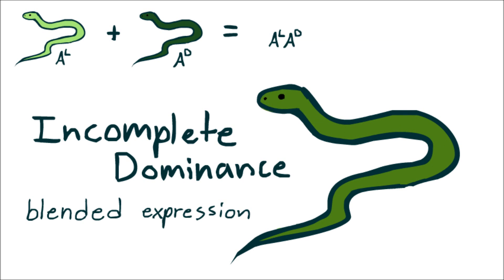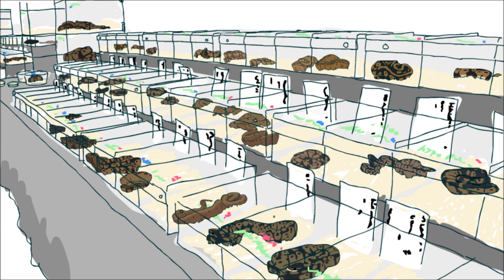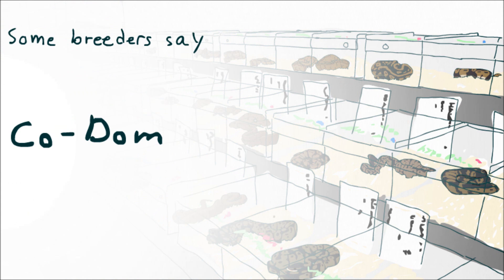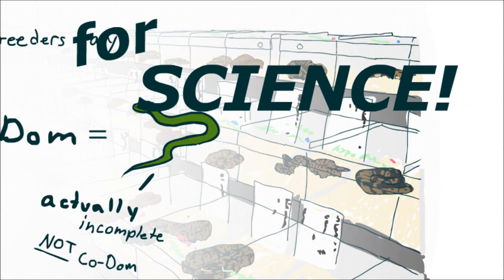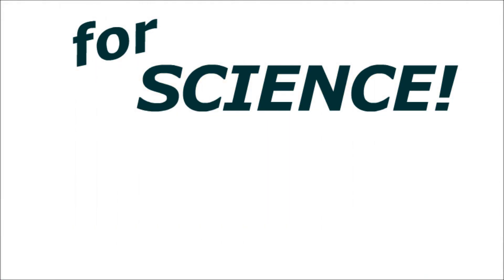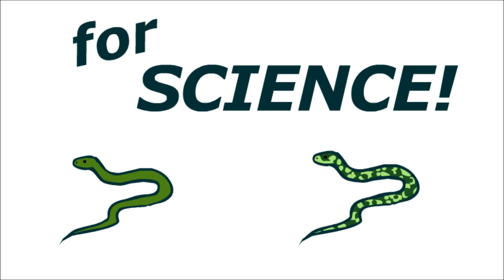There's a bit of a misconception out there — codominant is not the same as incomplete dominant. Out in the reptile community, you'll see that plenty of breeders use the term codominant to label traits that are technically incomplete dominant. And honestly, I'm fine with that. But here, for science and accuracy, incomplete dominance will be incomplete dominance and codominance will be codominance.